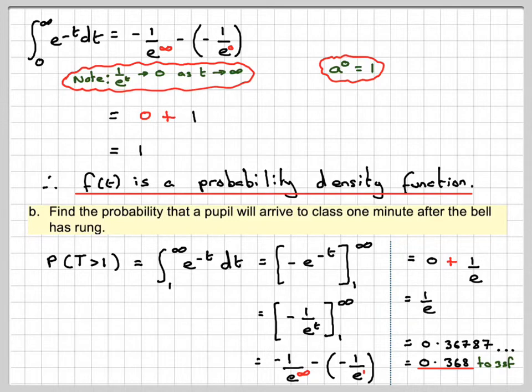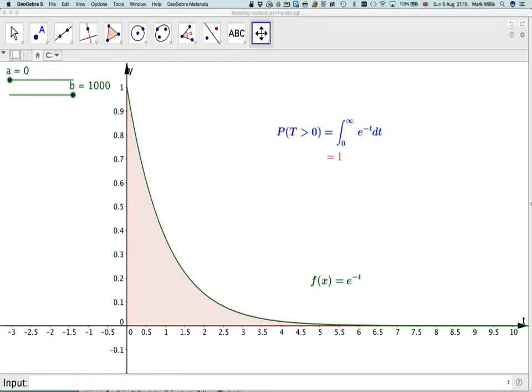If we do that using our GeoGebra applet, that means we move a to be 1. So this area here represents that probability. You see we get the same answer using the technology. We have to take a large number for infinity.